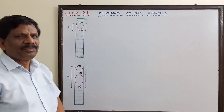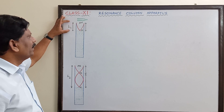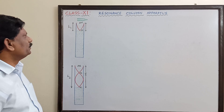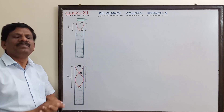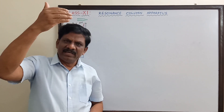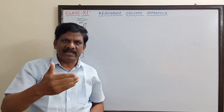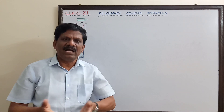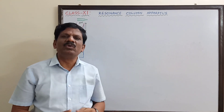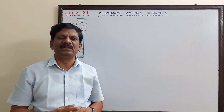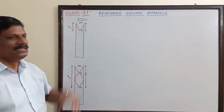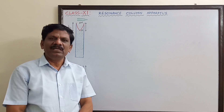Let us assume that at a particular length L1, the first resonance is taking place. When you keep the vibrating tuning fork above this air column, the sound waves — longitudinal waves — will go in the downward direction, fall on the water surface, and get reflected in the upward direction. The incident sound waves and the reflected sound waves will interfere with each other, and as a result, longitudinal standing waves will be produced.